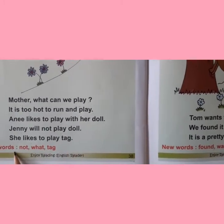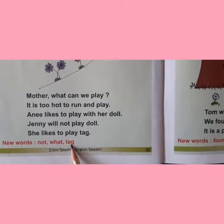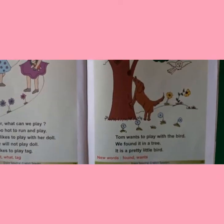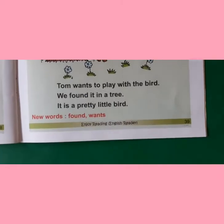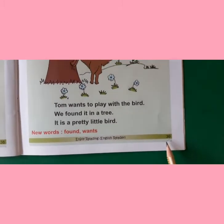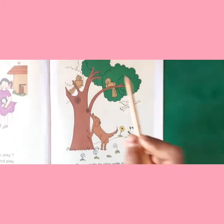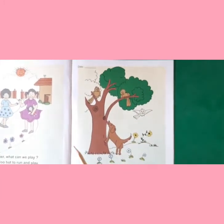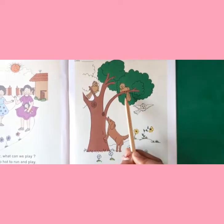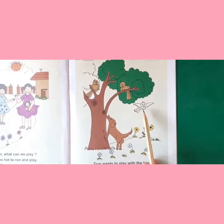And the last sentence is: She likes to play tag. The new words on this page are: not, what, tag. Now children, coming back to our new page, that is page 39. Let's have a picture talk. What can you see here? Yes, we can see birds. Here two birds are sitting on the tree, and one bird is flying.